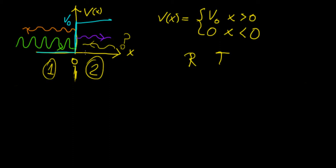This is the final video on the potential step problem. What we're going to do now is derive the total reflectance and transmittance of our particle based on this potential step. To actually do that, we need to introduce a new concept that we haven't talked about before, which is called the probability current.